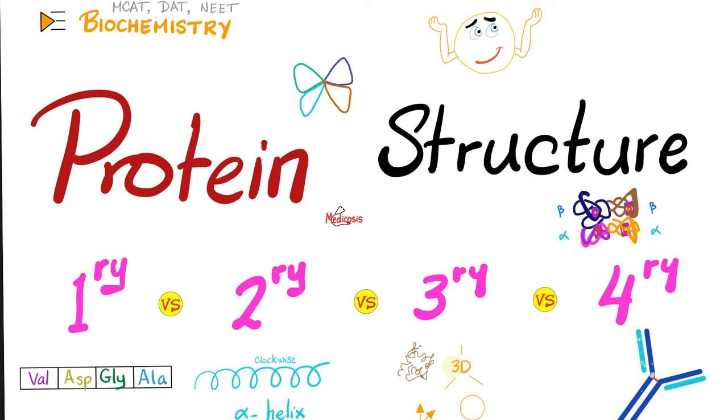Next is the tertiary, which is the three-dimensional shape of the protein. And last is the quaternary structure. By the way, not every protein has this. You gotta have at least two or more peptide chains to have it. Example is the hemoglobin because it has two alpha subunits and two beta subunits. That's a quaternary structure.